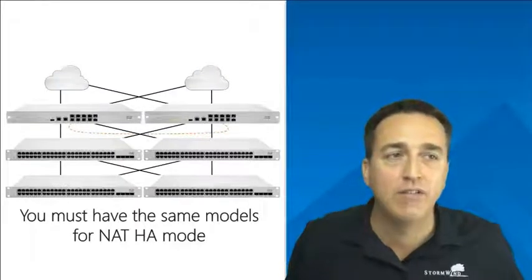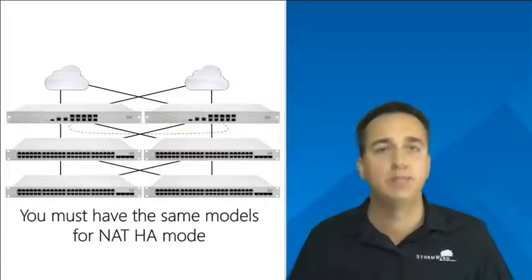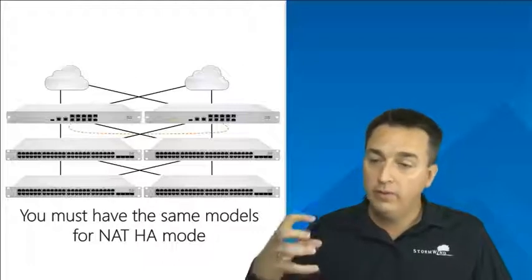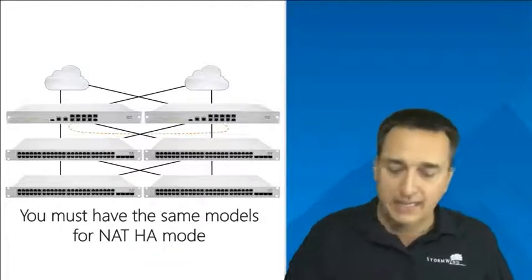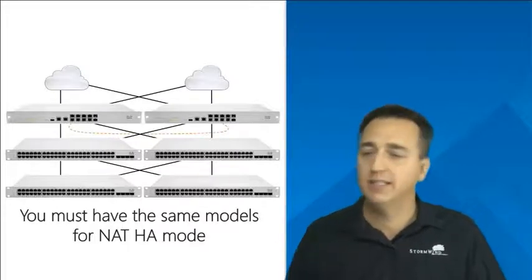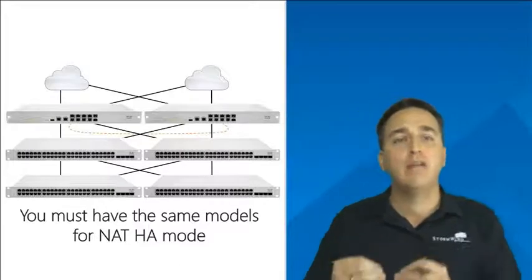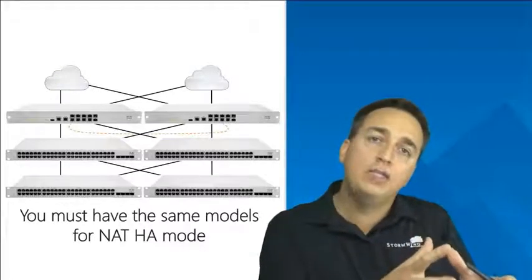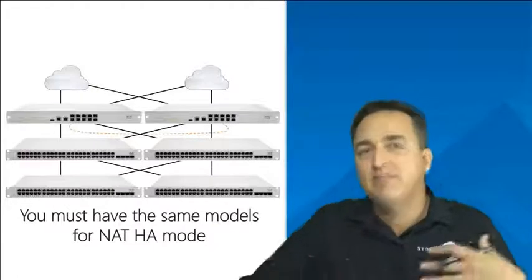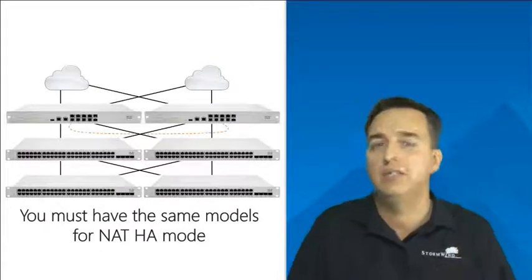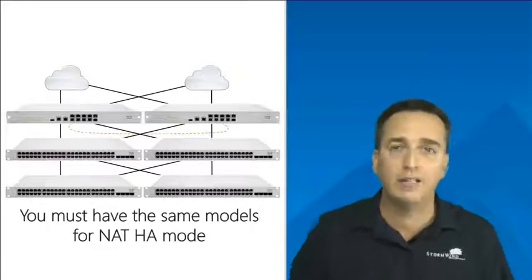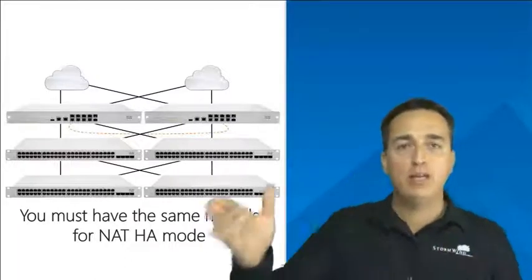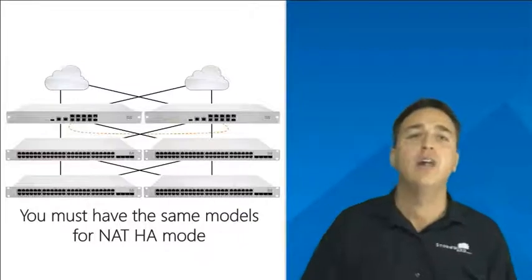Lastly, you need to have the same models for NAT HA mode, plain and simple. We already said we inherit the config, so if we don't have the exact same models of security appliances, it's not going to work. A lot of organizations think they can go with a high-end security appliance as the primary and a low-end one as the standby, reasoning they can deal with slower throughput during a failover as long as they still have connectivity. It's not going to work that way — you must wipe that mentality. They must match. If you go with an MX100 as the primary, you need to use an MX100 as your standby.